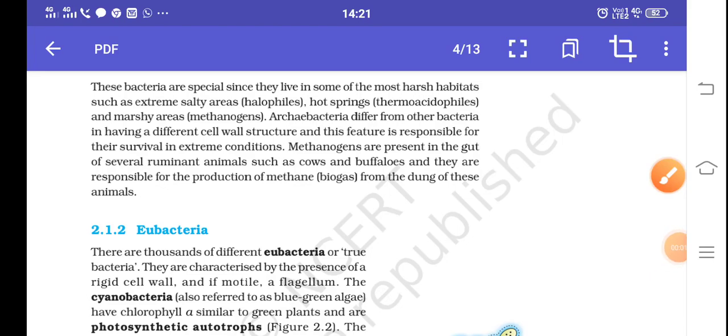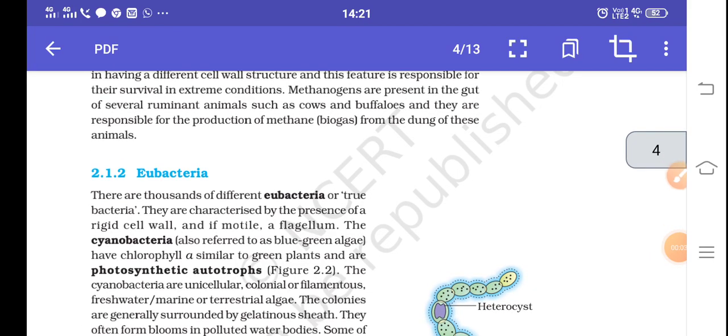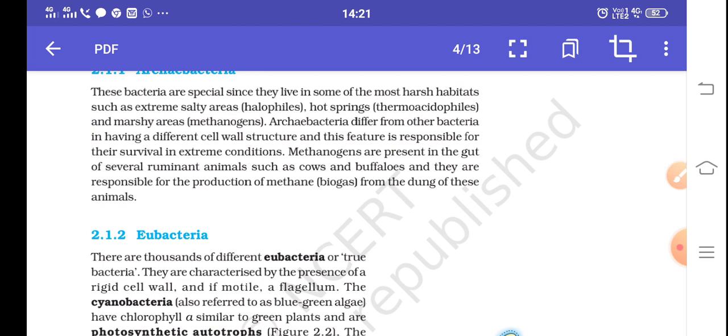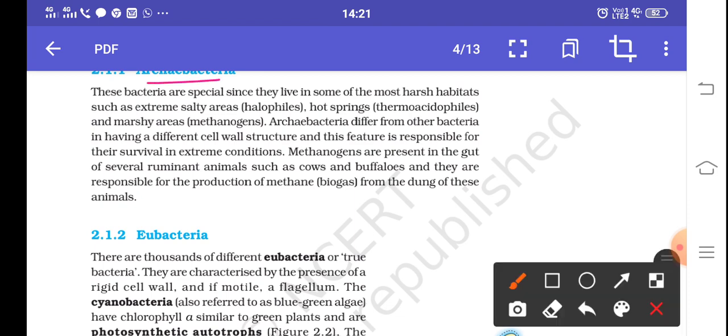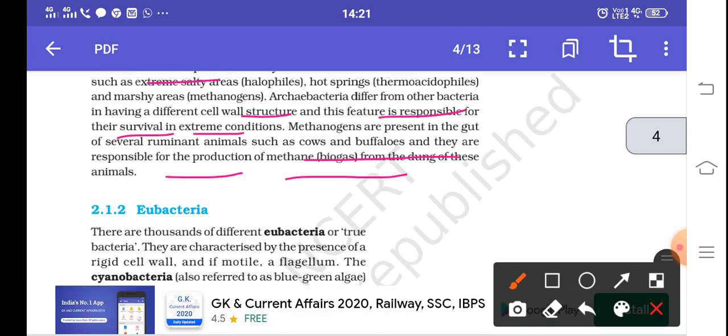In the previous class we discussed Archebacteria, a special bacteria that can survive in extreme conditions. Methanogens, halophiles, and thermoacidophiles are bacteria that can survive in salty areas, hot springs, and marshy areas. Methanogens are present in the gut of ruminants and help in digestion. They are very important because they are present in cow dung, so they are very helpful to synthesize biogas.